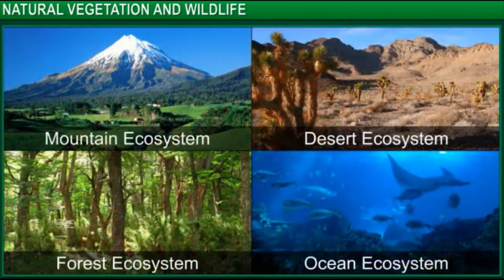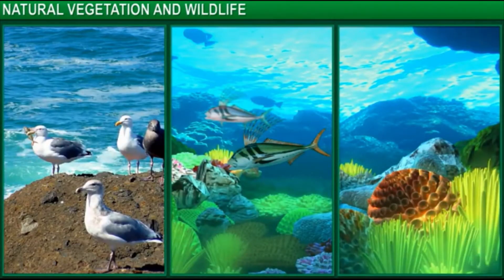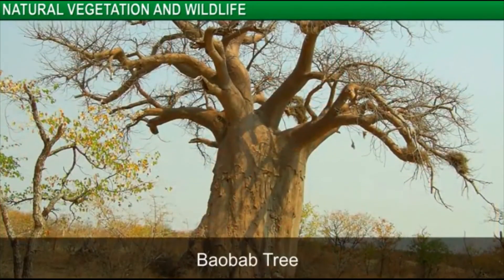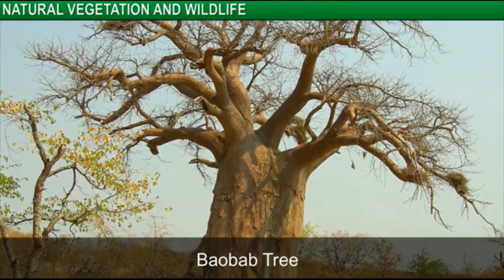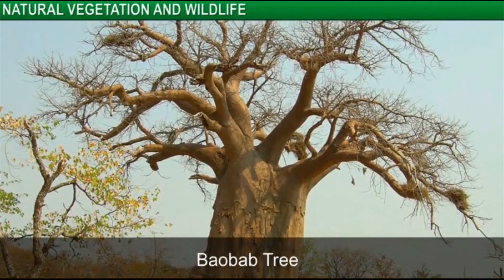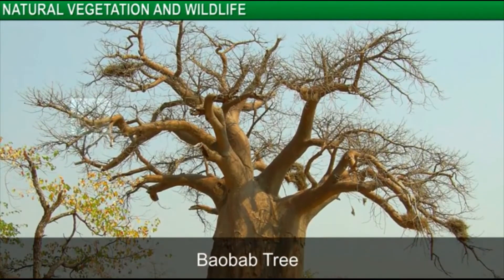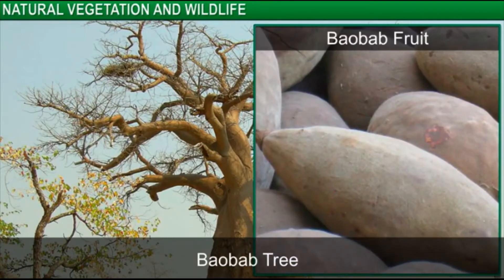The biosphere, in turn, is composed of ecosystems. An ecosystem refers to the natural surroundings in which living beings and non-living beings support each other. For example, the trunk of the baobab tree is swollen and oddly shaped as it collects water during the wet months and stores it for the dry season. Many animals as well as human beings take shelter in its trunk and also eat its fruits.